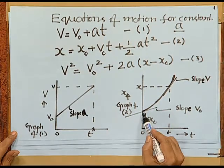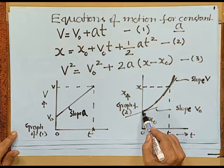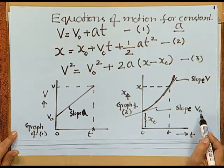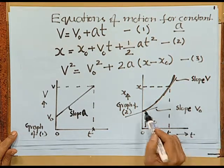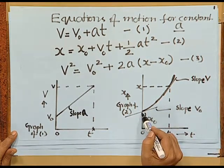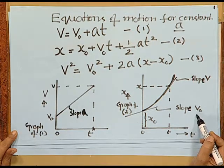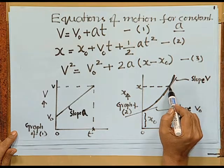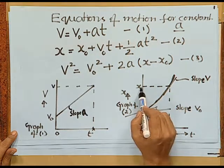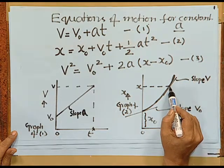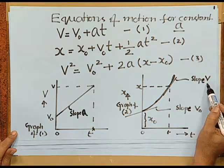The slope of the x-t curve at t = 0 gives v₀ — that is, the slope of x versus t gives you the velocity, and at t = 0 it gives the initial velocity. At any time when the object is at position x, the slope at that point gives you the velocity at that instant of time.